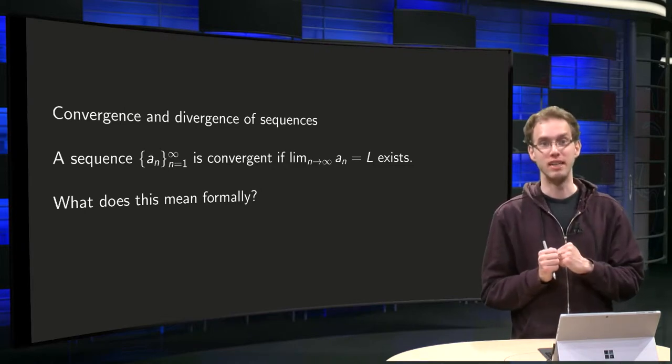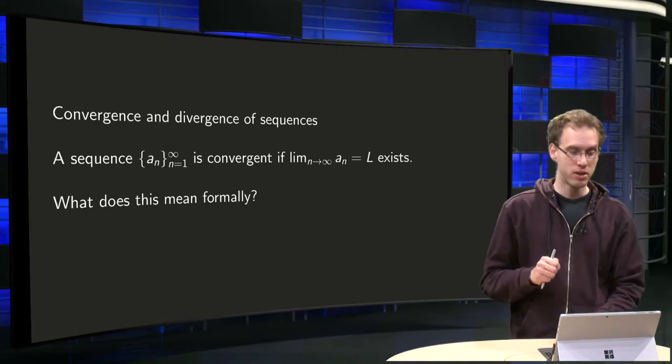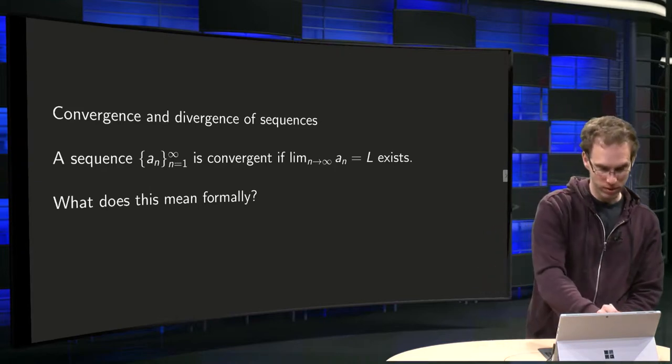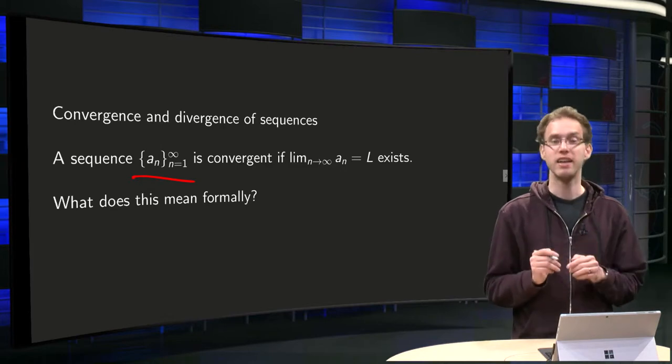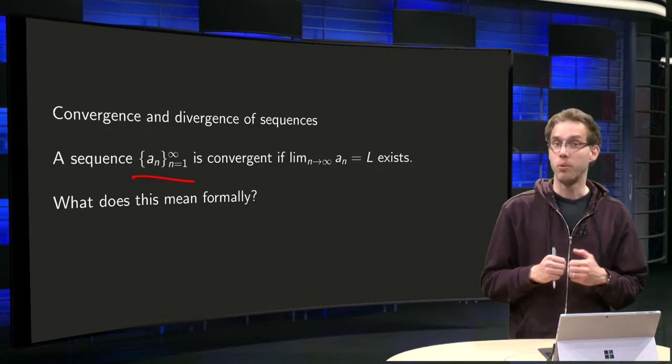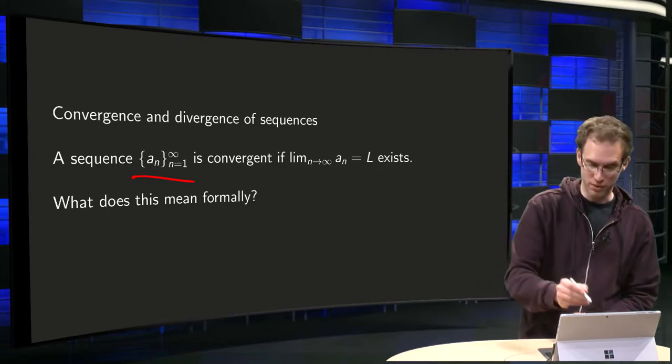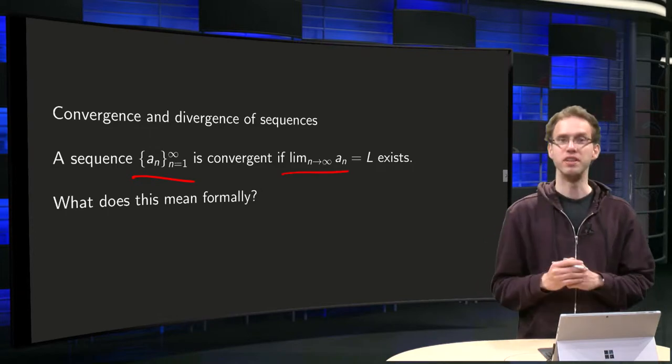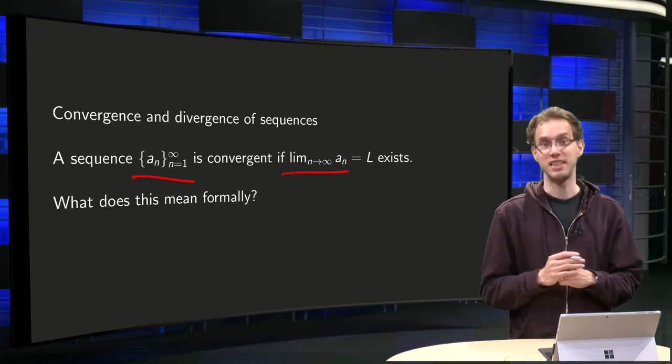That is what you will learn in this video. A sequence, denoted in brackets with a_n from 1 to infinity (the index), is said to be convergent if the limit as n goes to infinity of a_n equals L, if this limit exists.